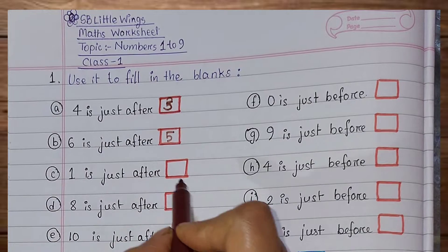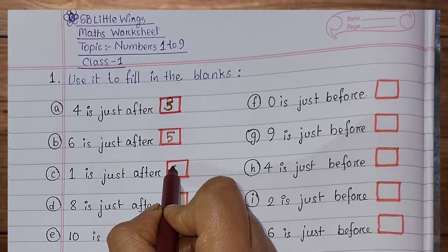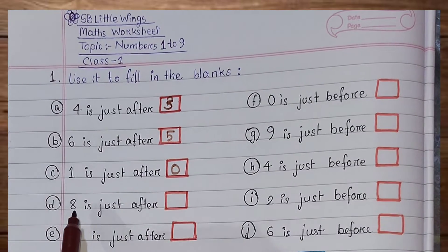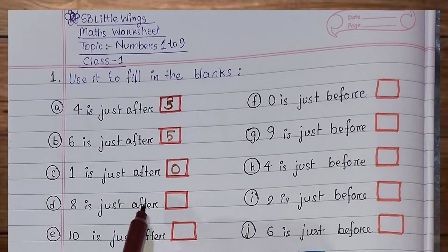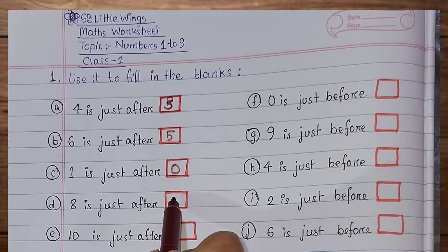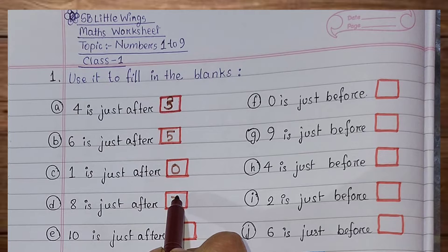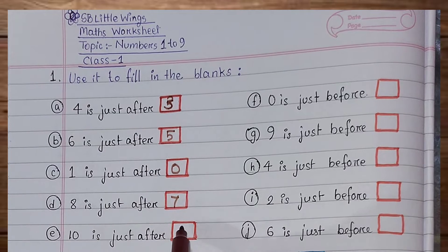1 is just after 0. That means before number it says 8 is just after 7, and 10 is just after 9.